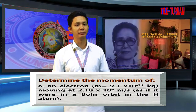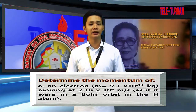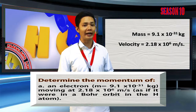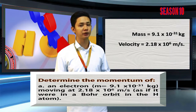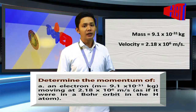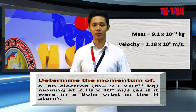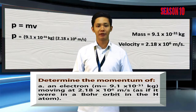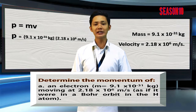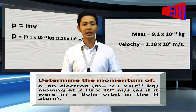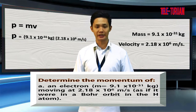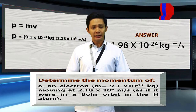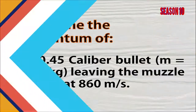In solving problems involving momentum, first, let us identify the given values. For problem letter A, the given values are: mass is equal to 9.1 x 10 raised to negative 31 kilogram, and velocity is 2.18 x 10 raised to 6 meter per second. Using the formula P equals to M times V, substitute the given values: 9.1 x 10 raised to negative 31 kilogram multiplied by 2.18 x 10 raised to 6 meter per second. That gives us an answer of 1.98 x 10 raised to negative 24 kilogram meter per second.